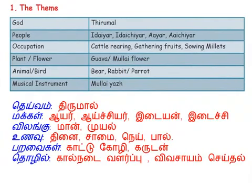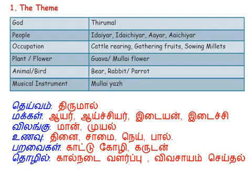The theme of Mullai land: just as Kuringi land has a god, people, and occupation, Mullai land also has a god, people, occupation, plant, flower, animal, bird, and musical instrument. The people are Idayar, Idachiyar, Ayar, and Ayachiyar. The occupation of the people is cattle rearing, gathering fruits, and sowing millets.